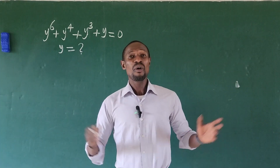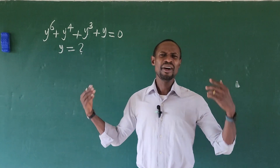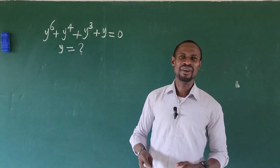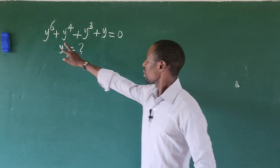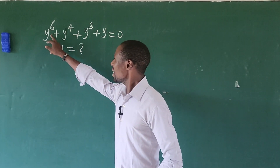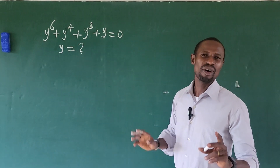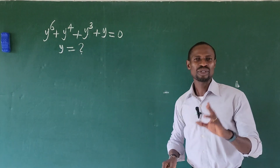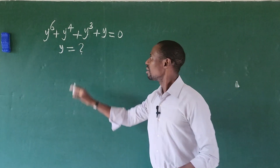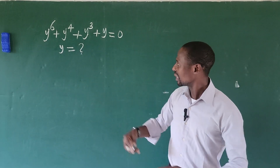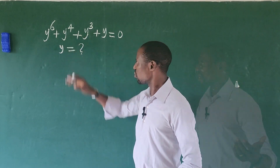Hello everyone, welcome to OnlineMaskTV. Here we have a system of a hexic equation. The highest power of the variable here is 6. In other words, we have to solve for 6 quantities or roots that will satisfy this equation.